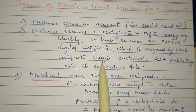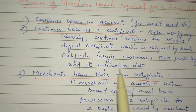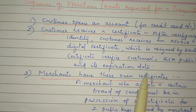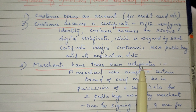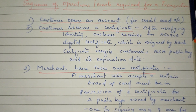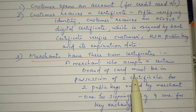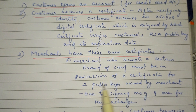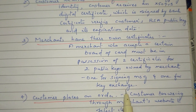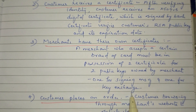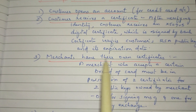The certificate verifies the customer's RSA public key and its expiration date. How do you verify this certificate? If you verify the customer public key, then you will verify the card. Then, the merchant has their own certificate. A merchant who accepts a certain brand of card must be in possession of two certificates for two public keys owned by the merchant — one for signing the message and one for the key exchange.